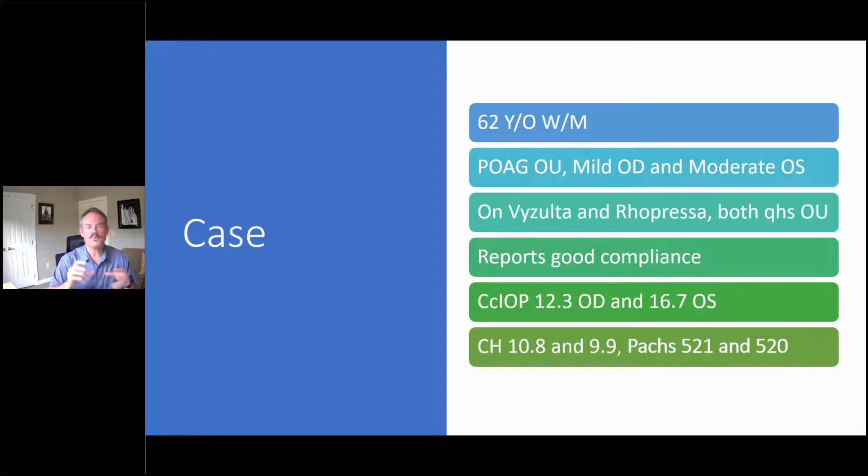The hysteresis is 10.8 in the right and 9.9 in the left, and that hysteresis number in the left concerns me. There's some asymmetric IOP that concerns me as well. The PACs are 521 and 520.